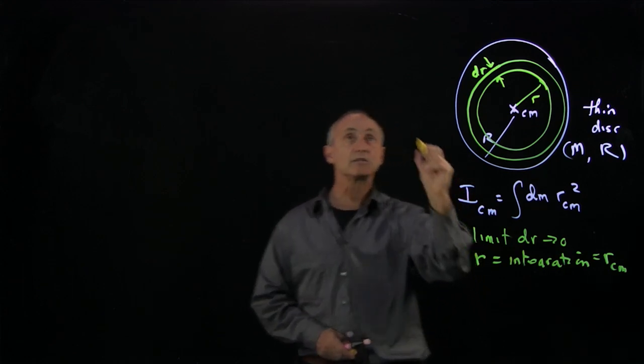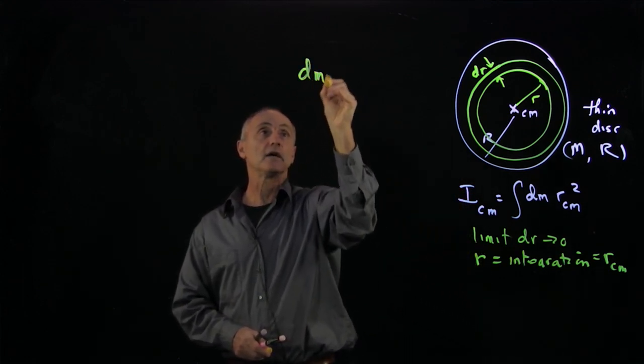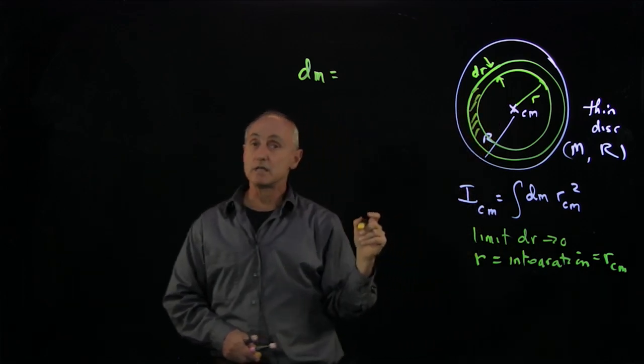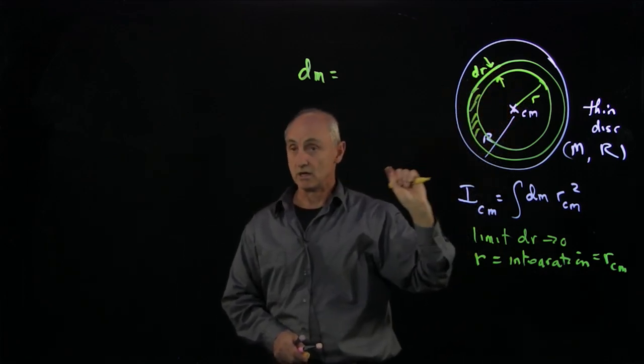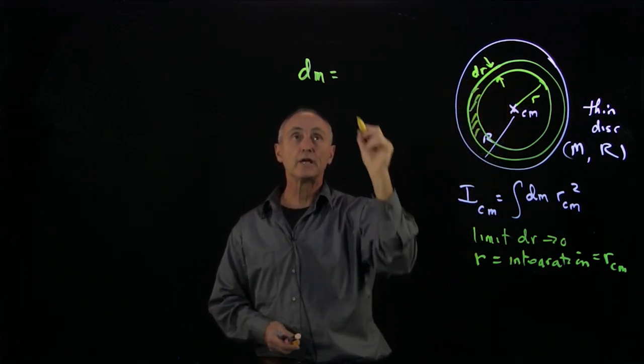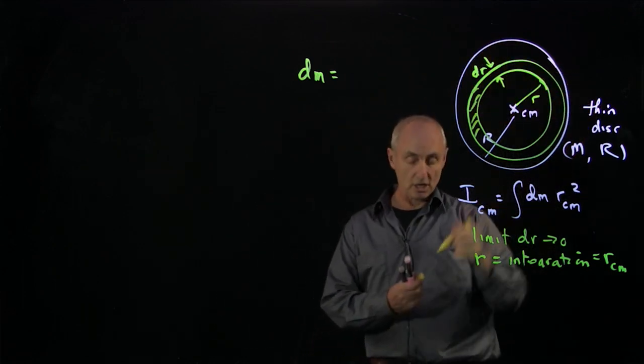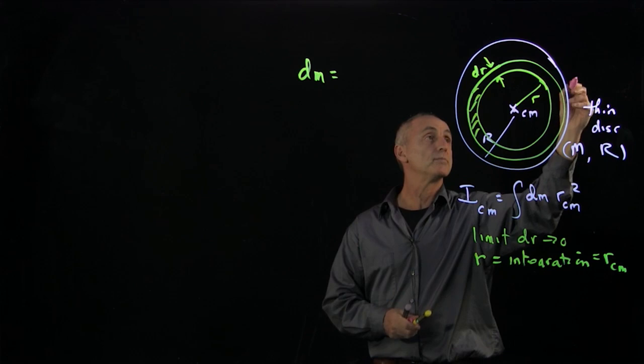So what is the mass that's contained in this area, a disk of radius r and thickness dr? Well, one way to think about that is our thin disk is going to be uniform.